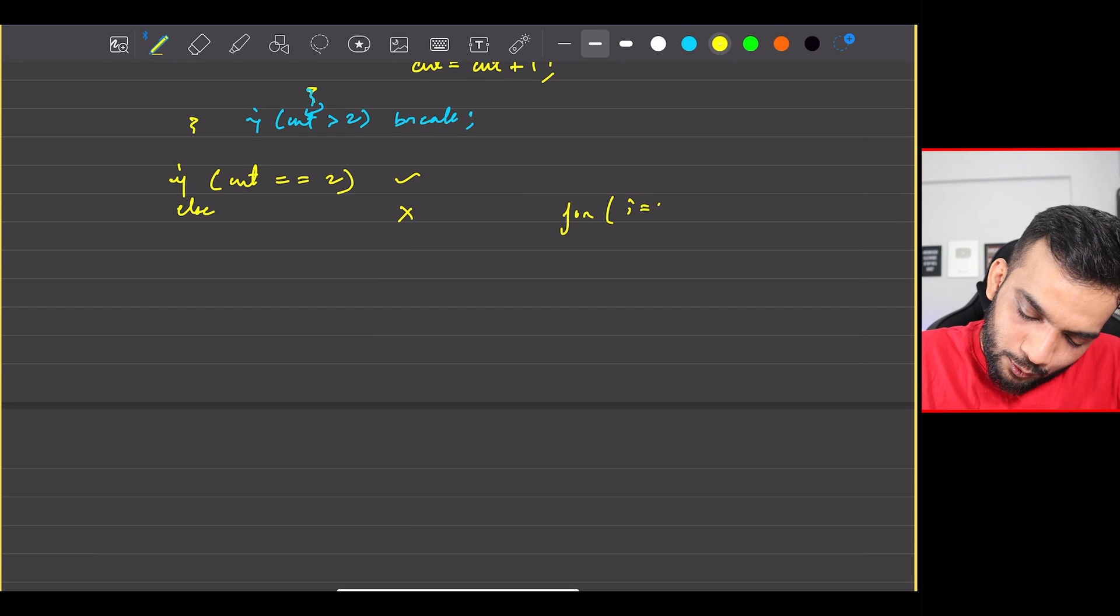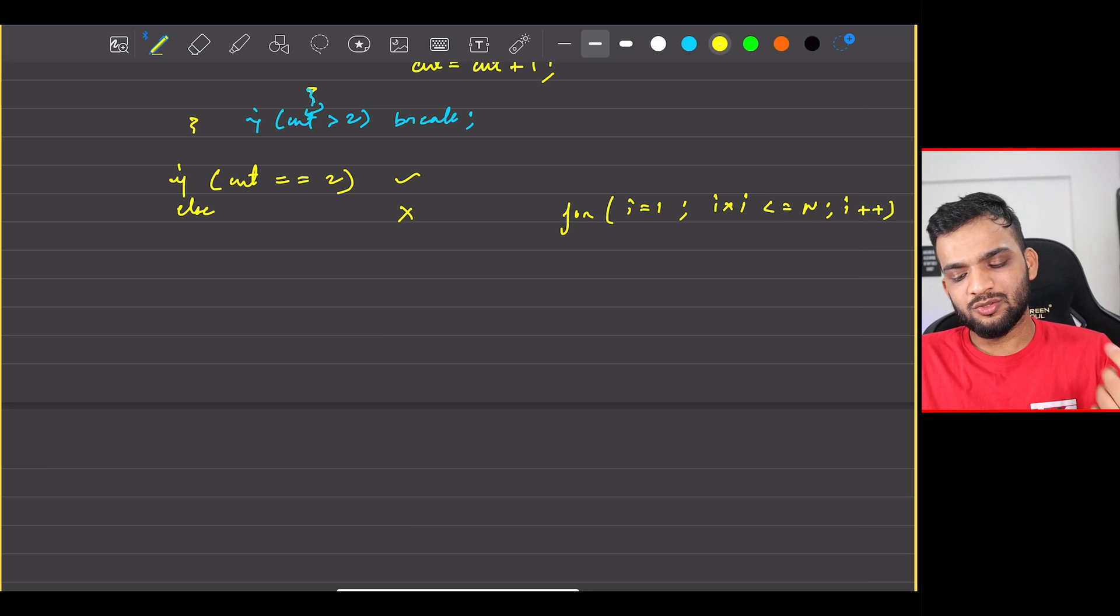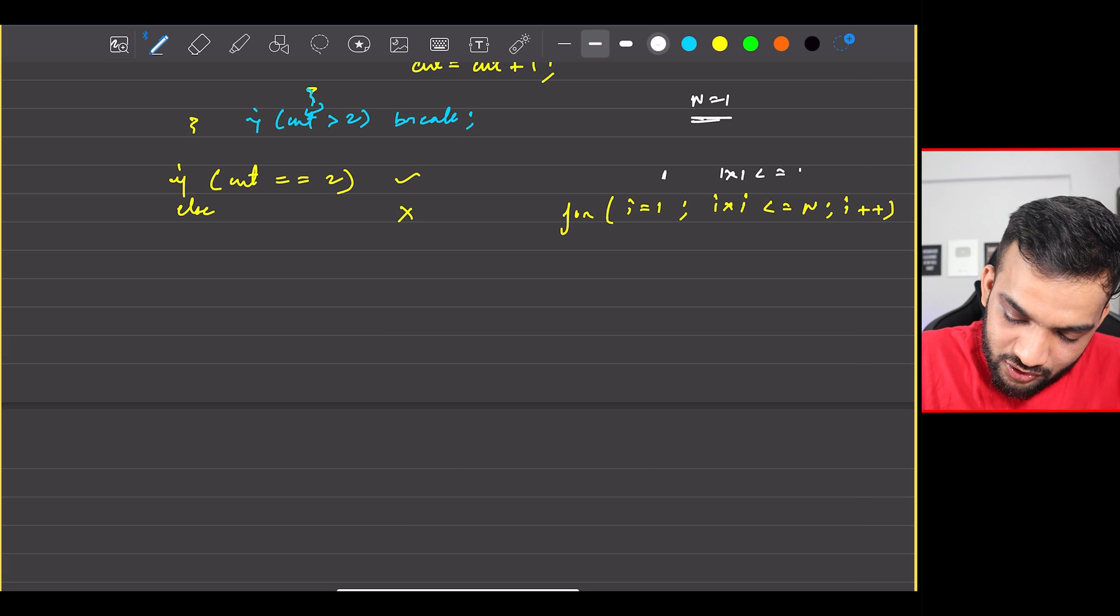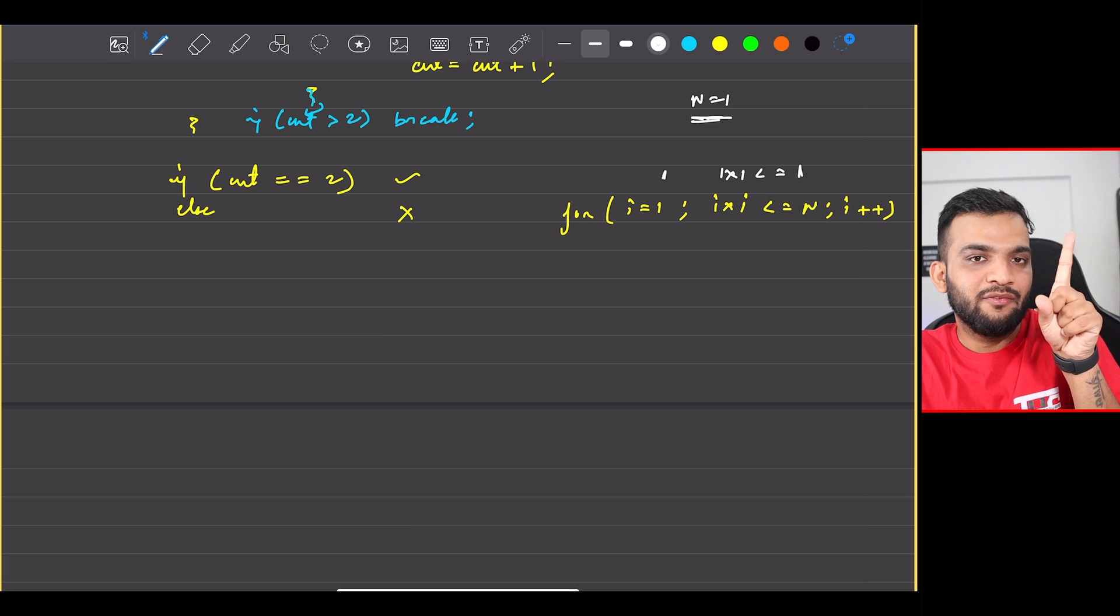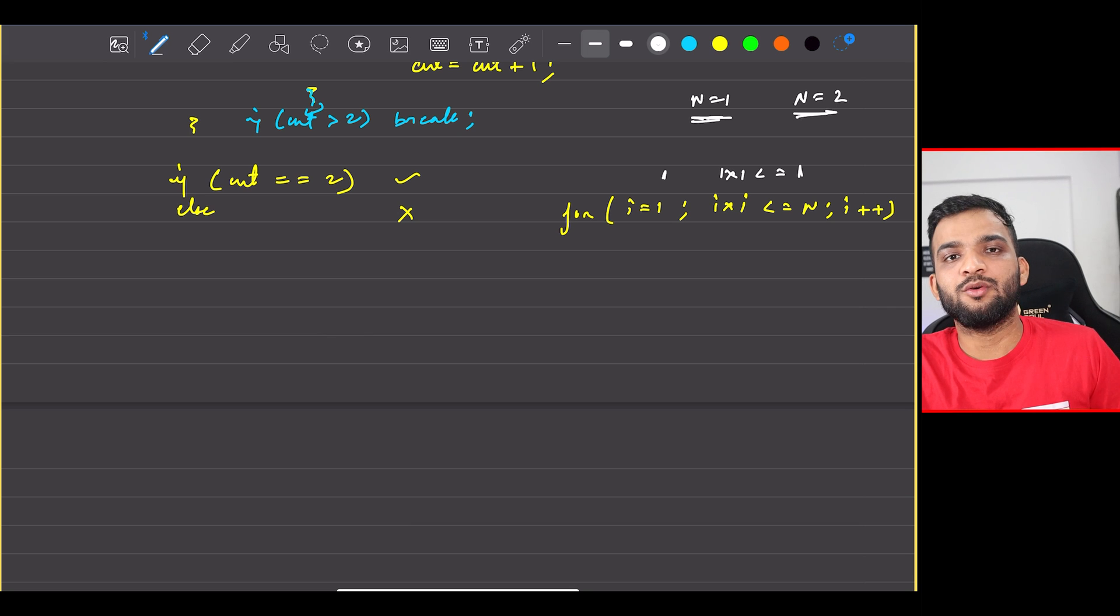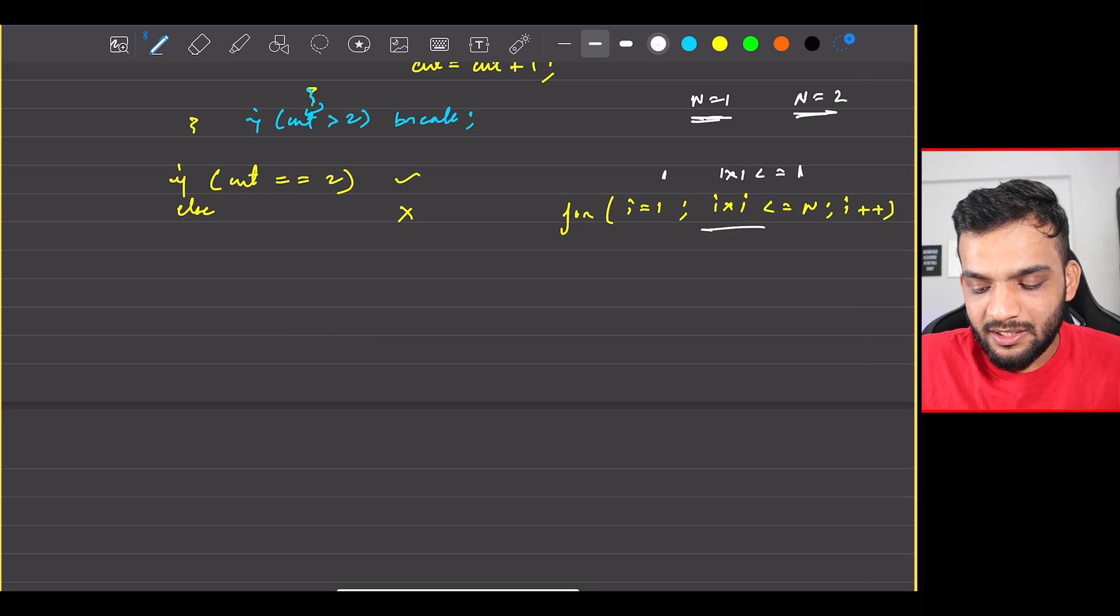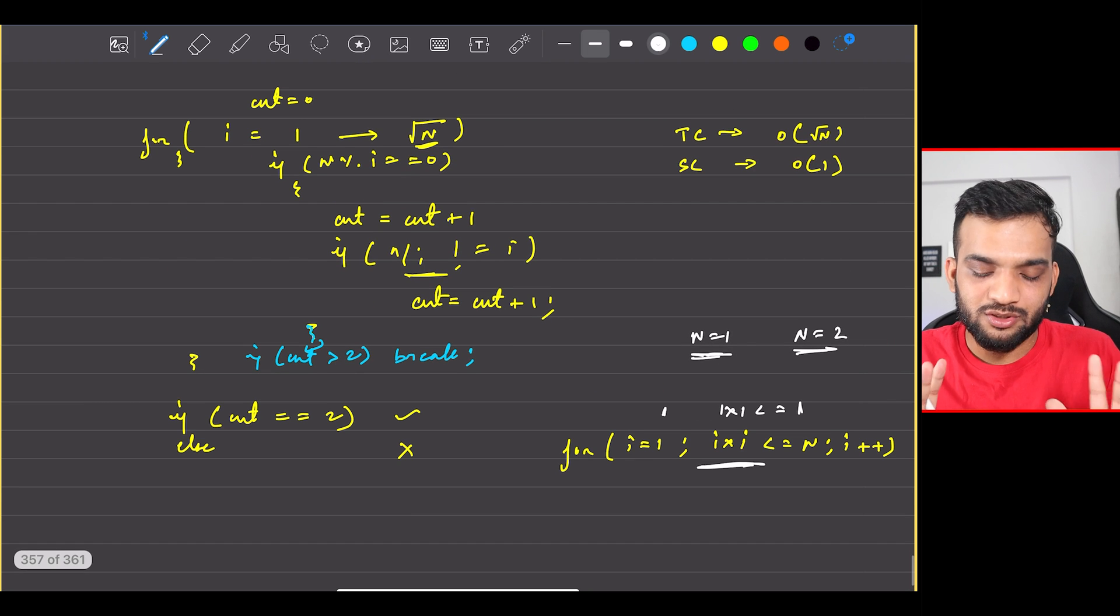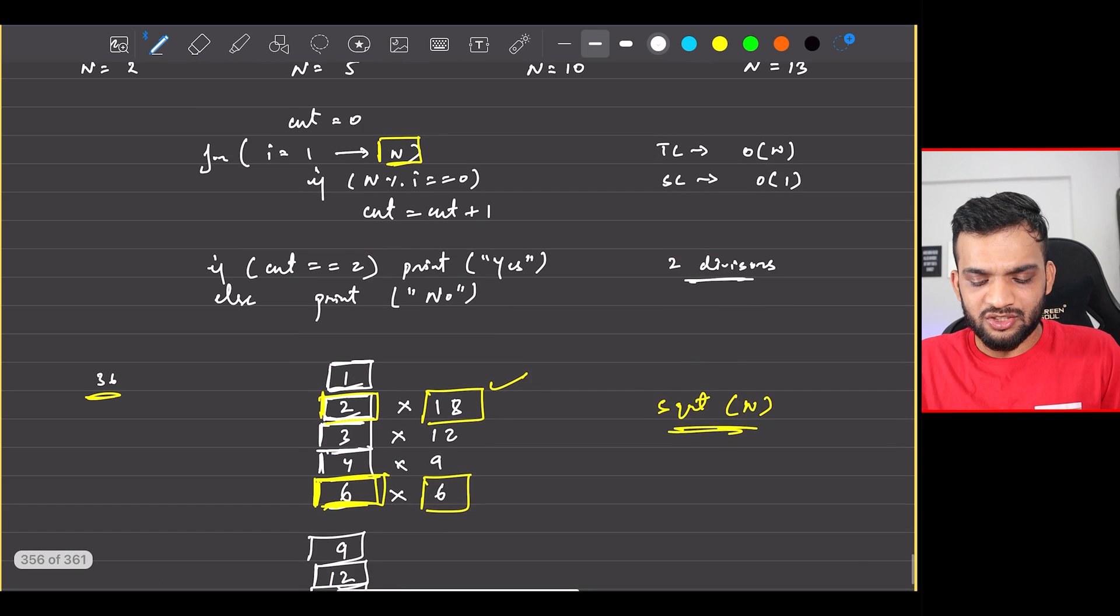This is going to work for all the numbers. If you take n equal to 1, the loop will run for 1 - 1 into 1 less than equal to n which is 1, so it's going to count one divisor for n equal to 1. For n equal to 2, it's going to count straight away two divisors. So this loop will be working for everything. Counter equal to 2 works fine.